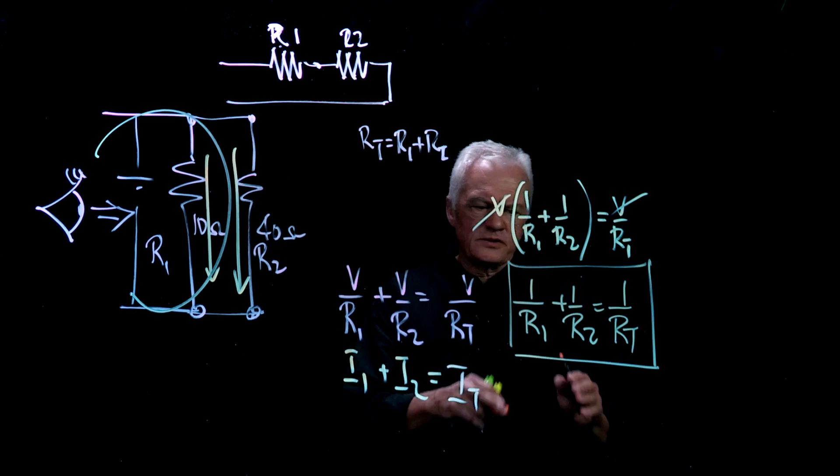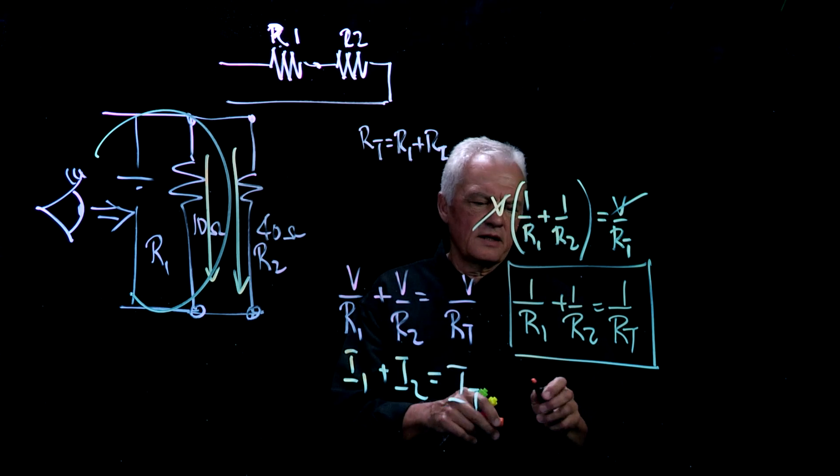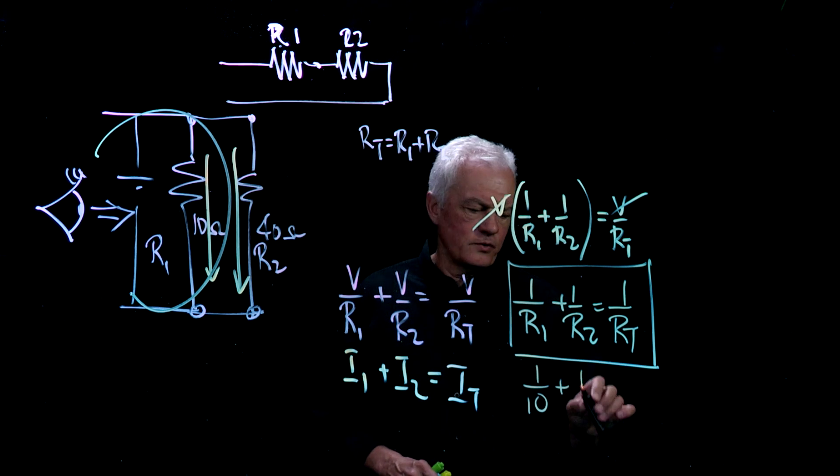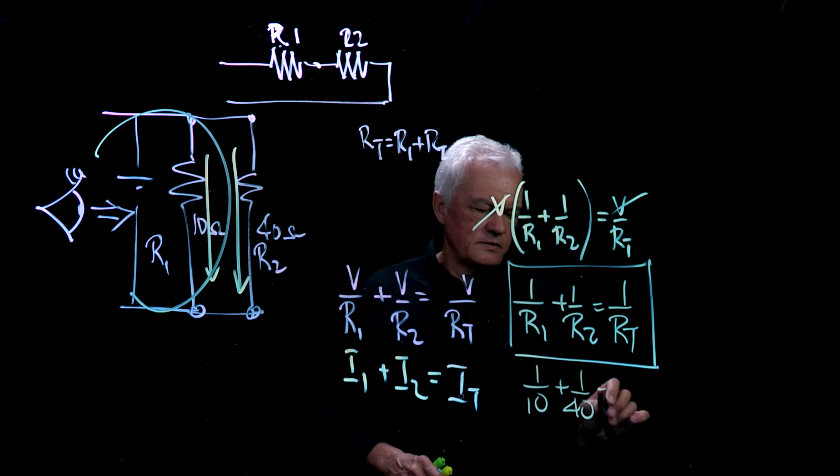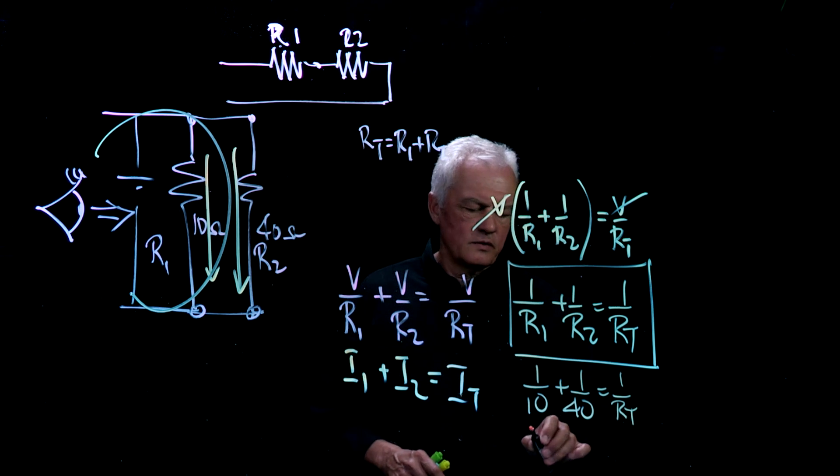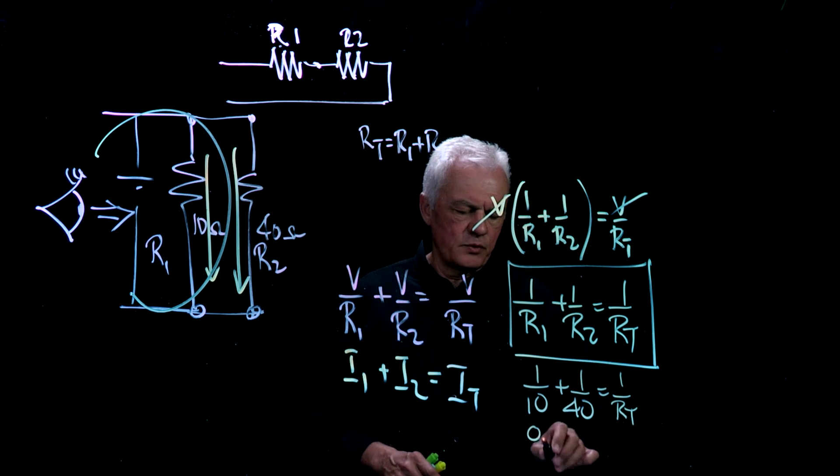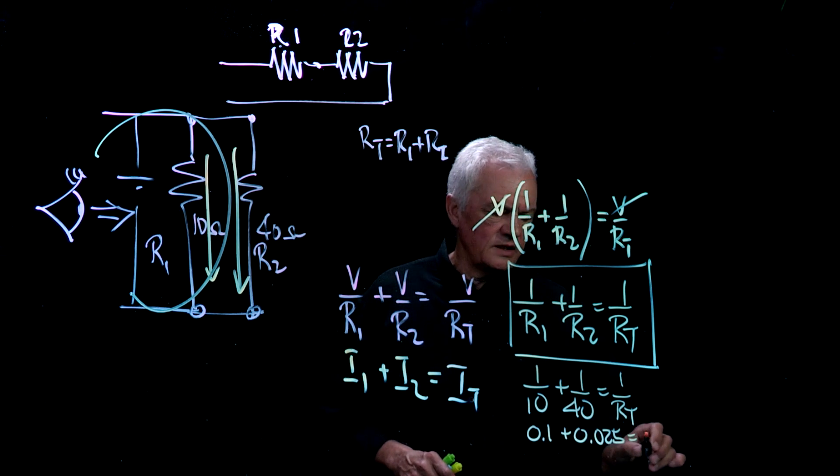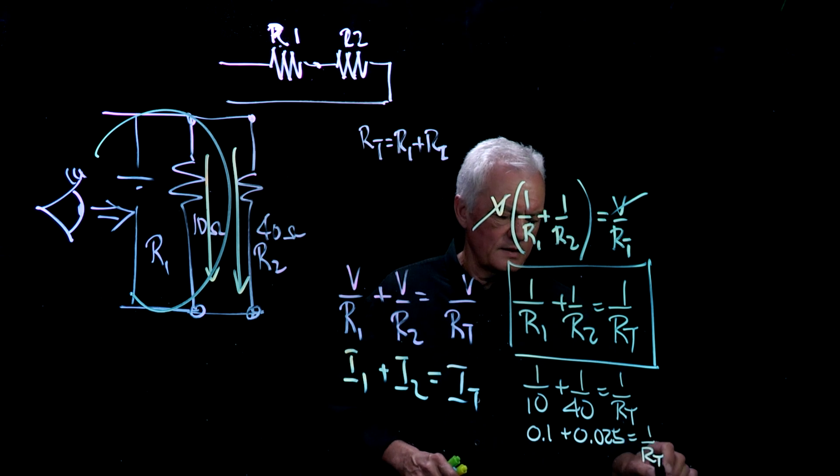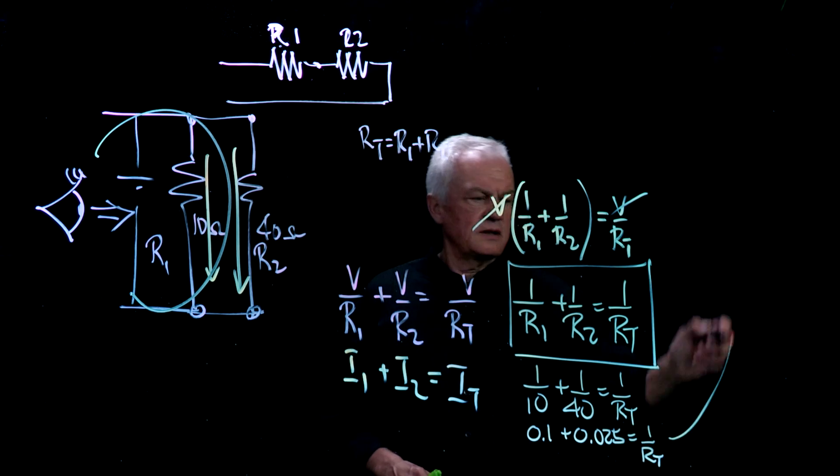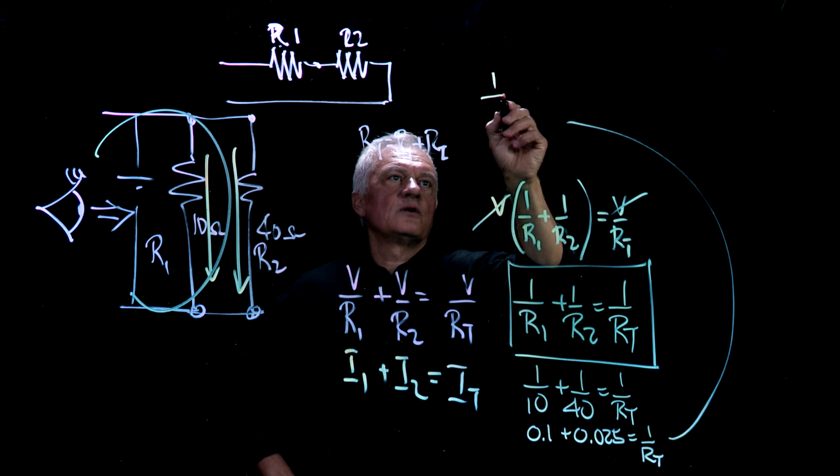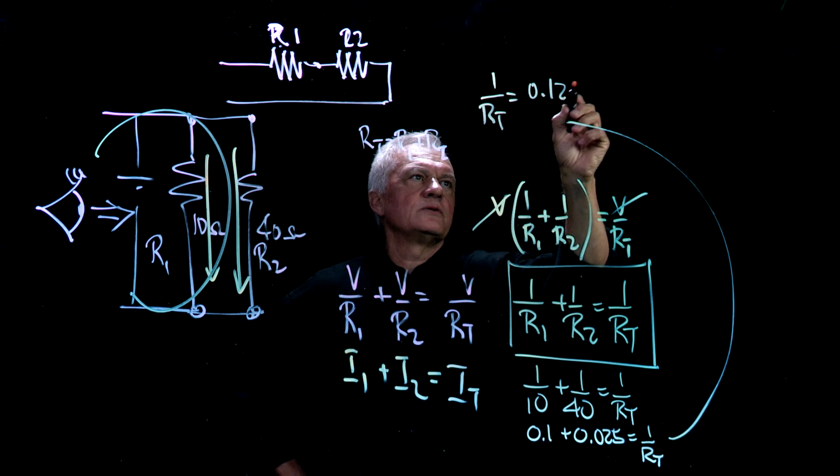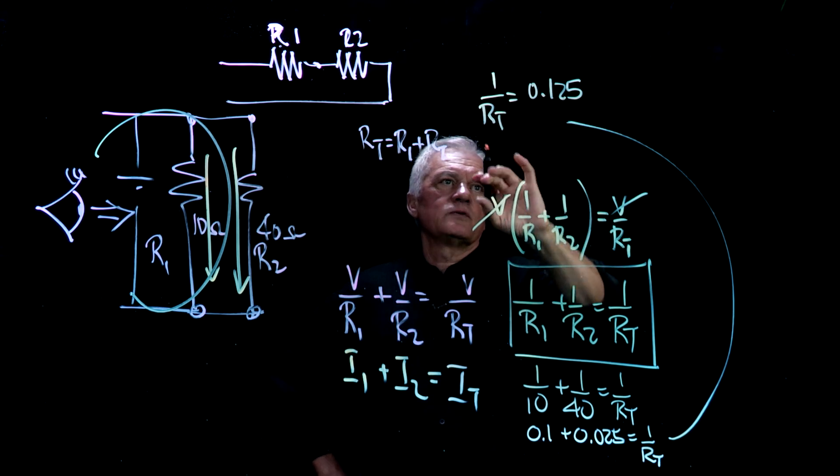Now some professors stop here because with a calculator, we've got here 1 over 10, and we've got 1 over 40 is equal to 1 over the total. 1 over 10 is 0.1. 1 over 40 is 0.025. That's going to equal 1 over the total. So what we've got is, let me just come up here, 1 over the total is equal to 0.125.